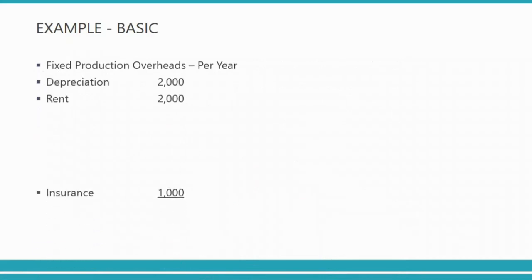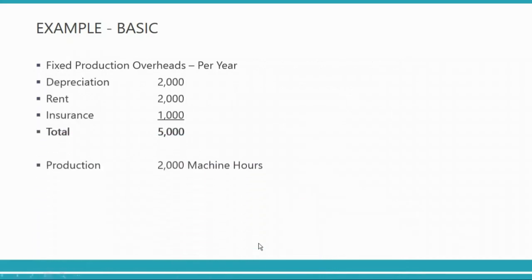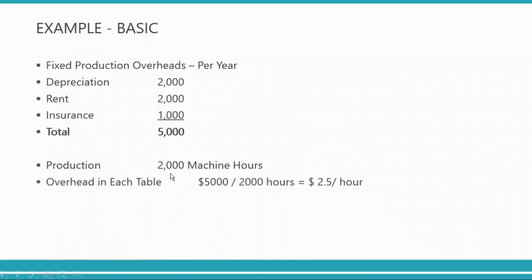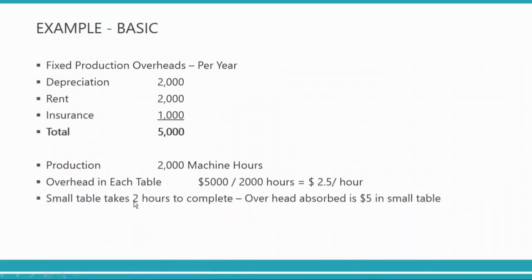For example, using the same five thousand dollar overhead, if estimated production is two thousand machine hours, then five thousand dollars divided by two thousand hours gives two point five dollars per hour. Overhead is now calculated based on machine hours rather than per table. So if a small table takes two hours to complete, overhead absorbed is two hours multiplied by 2.5 — which equals five dollars — and that gets added to the cost of making that small table.